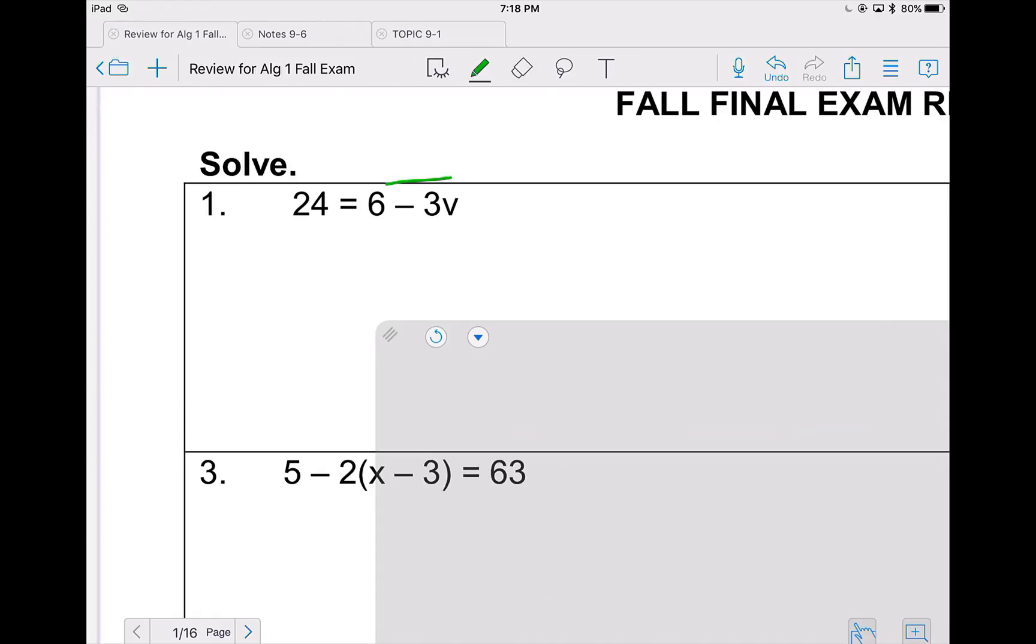If I box my variable, the thing on the same side as the box not in the box is 6. In order to move the 6, I will subtract because that puts it on the opposite side. Anytime I cross this middle line, I have to do the opposite operation. 24 minus 6 is 18 and I bring down the box.